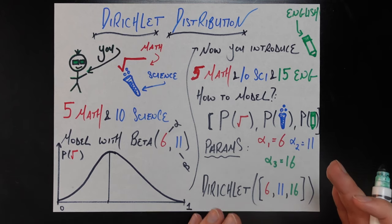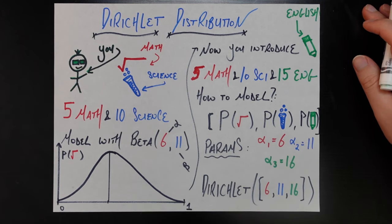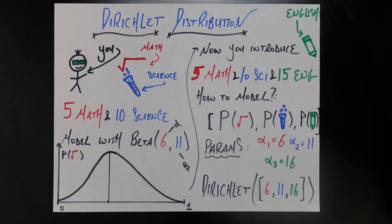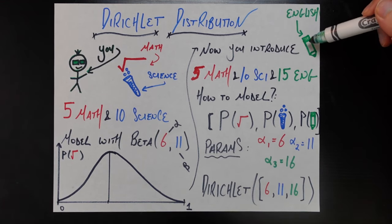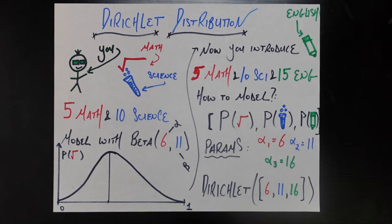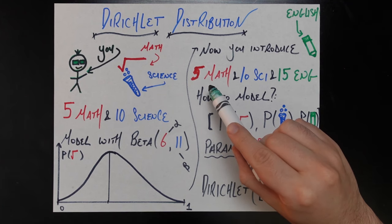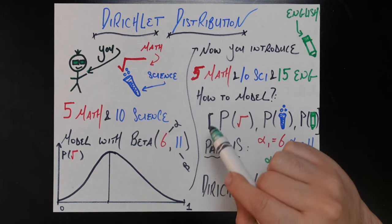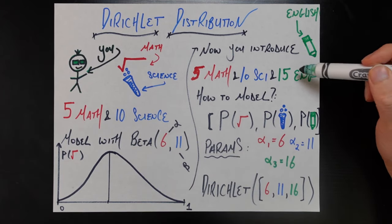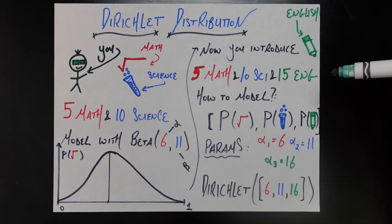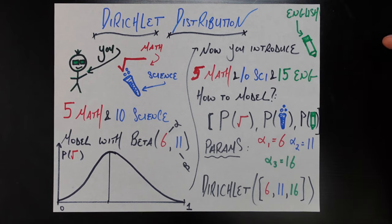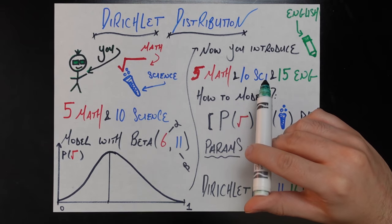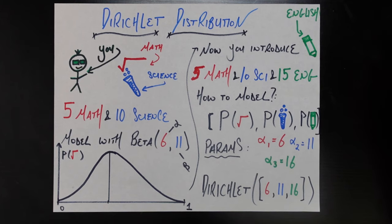So that's mostly recap. Now here comes the extension. Let's say your university grows a little bit and you're able to offer a new major. You hired some extra professors, you have the resources in place, so you introduce an English major, denoted by this pencil. In the first class, you have five students majoring in math, ten students majoring in science — just like before — and now fifteen students majoring in English. How do we model the probability of each of these?